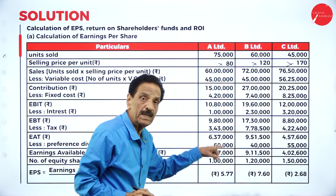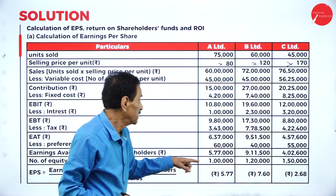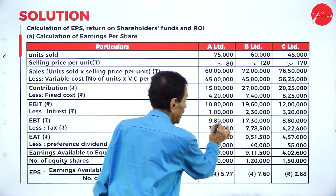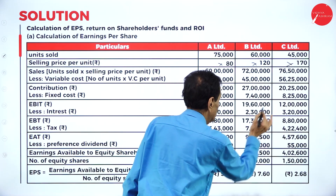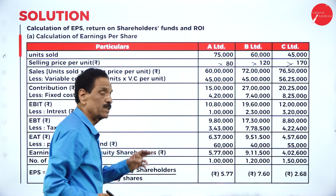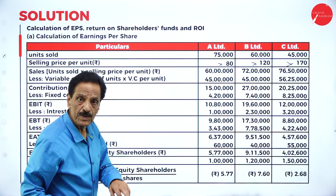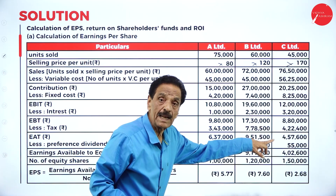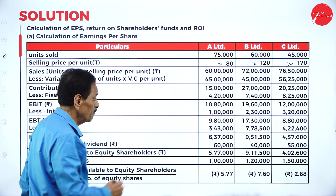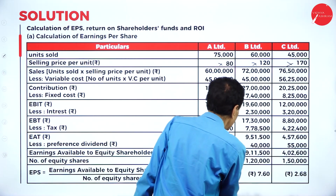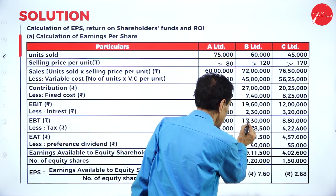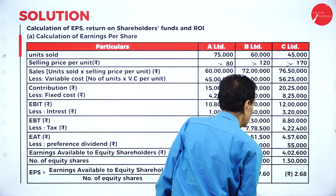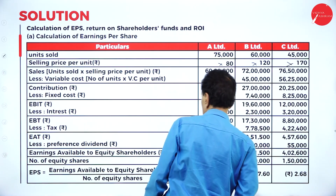Minus fixed cost should be deducted. So if we deduct the fixed cost, it becomes 10 lakh 80,000; 19 lakh 60,000; 12 lakh. Minus interest on the debenture is given: 1 lakh; 2 lakh 30,000; 3 lakh 20,000. If we deduct, it becomes 9 lakh 80,000; 17 lakh 30,000; 8 lakh 80,000. That is EBT — earning before taxation.